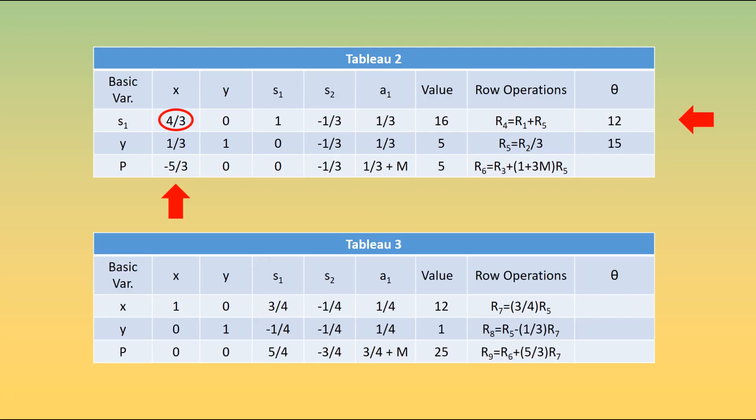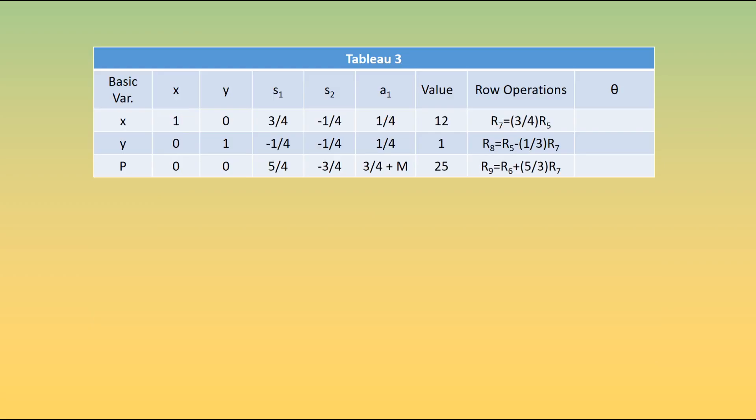Now, at this point, we have a slight problem. In the S2 column, we see that we have the only negative value, minus 3 over 4. This is our pivot column. But when we work out the values of theta, we see that they're both negative. And remember, we need to find the smallest positive value. There aren't any in this case, and so we cannot carry on. So even though we have a negative value on the P row, we're actually at our optimum solution. We have x and y values, we have a P value, and this is the optimal solution for this problem.